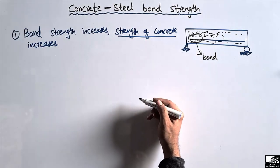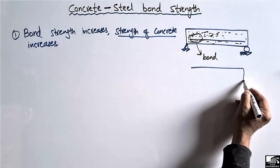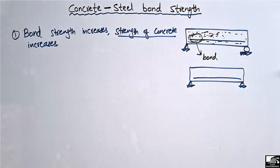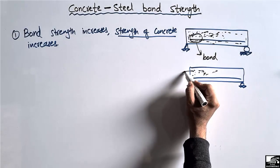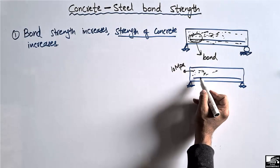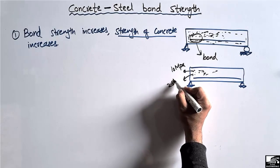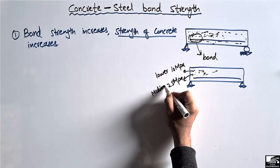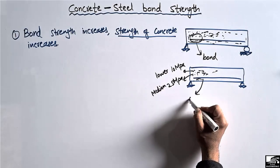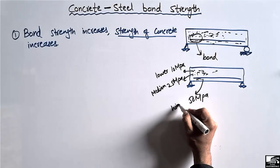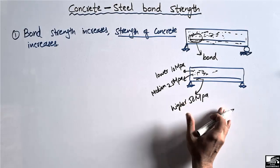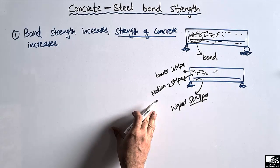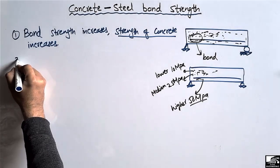For example, consider the same beam with a steel bar placed in it. If the concrete strength is 10 MPa, the bond strength will be lower compared to concrete of 25 MPa, which gives medium bond strength. If we use concrete with a strength of 50 MPa, we get higher bond strength. So bond strength is directly dependent on concrete strength.